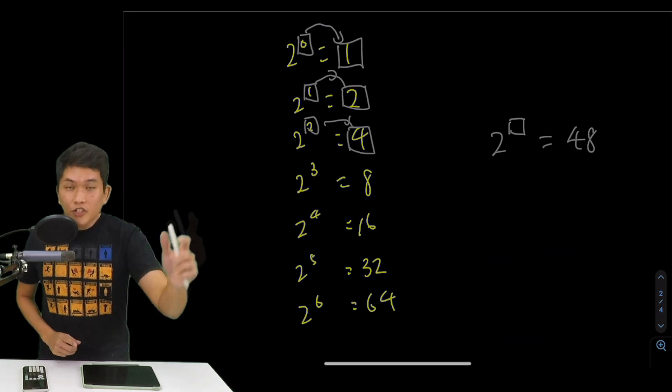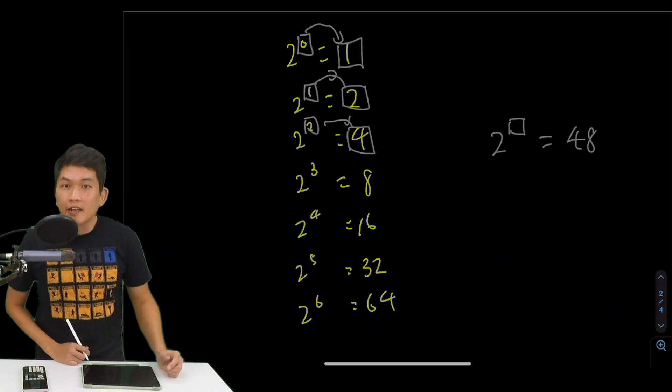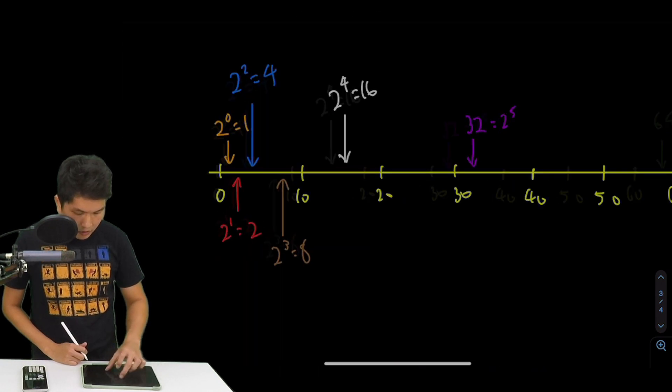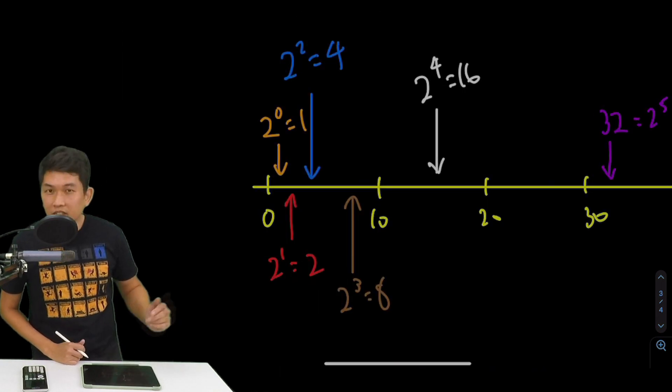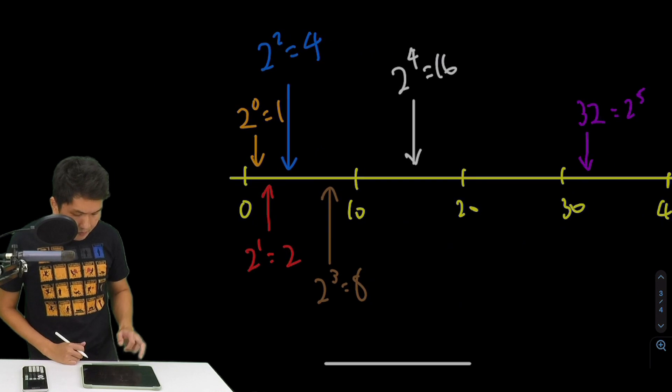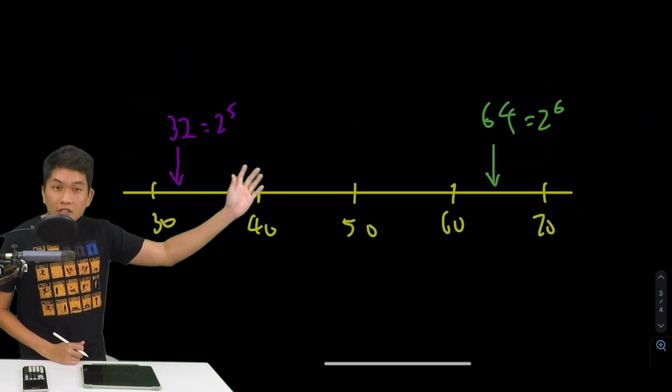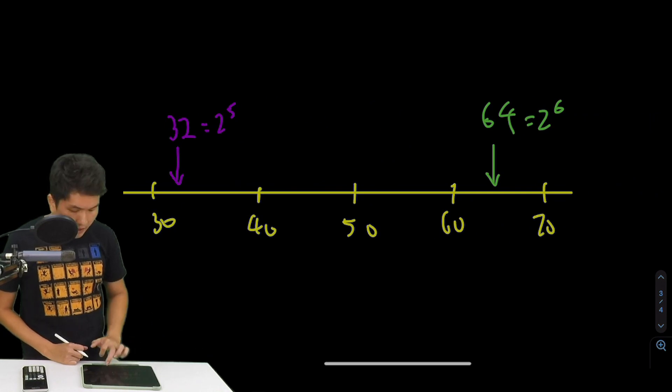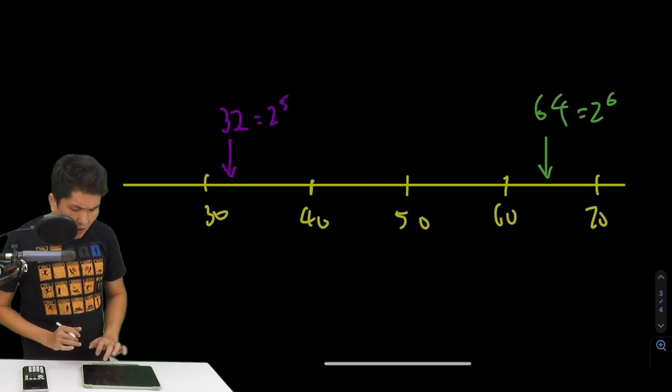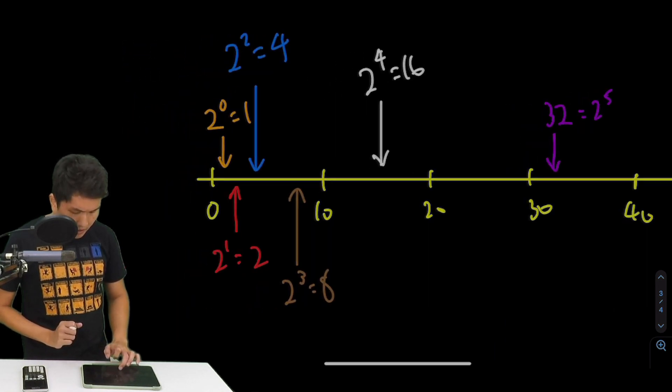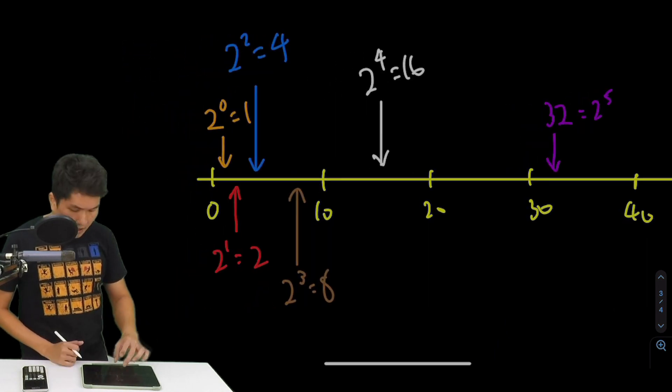So another way to visualize this is let's take a look at a number line. So I've drawn out a number line over here from 0 all the way to 70 because I wanted to have 2 to the power of 6, 64.